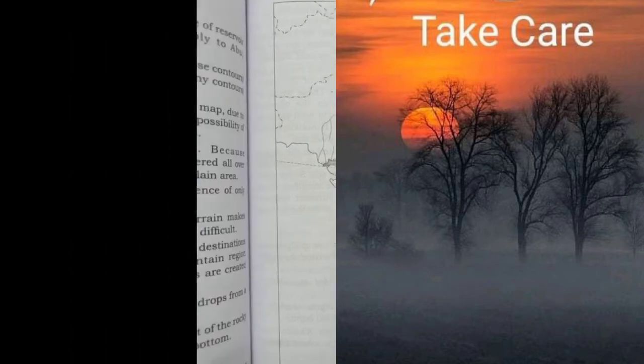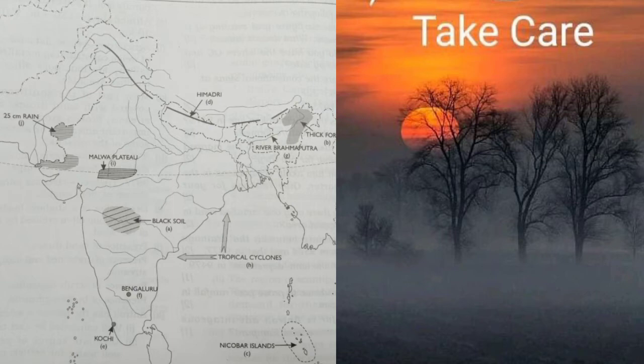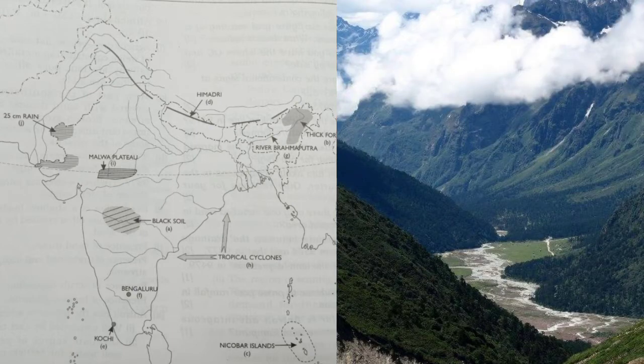Next map: 'A' — an area of Peninsular India having black soil. 'B' — an area in northeastern India where there is thick forest. 'C' — the Nicobar Islands. 'D' — the Himadri. 'E' — a tea exporting port of South India. Name the capital city of Karnataka and draw river Brahmaputra.